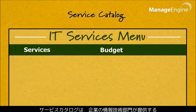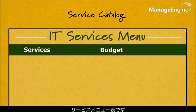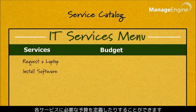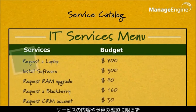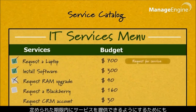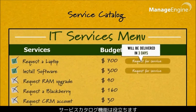Service Catalog is a menu card offered by the IT department, defining what services the users can order and the budget allocated for it. Along with defining what's available, it also helps in delivering the service as agreed upon time.